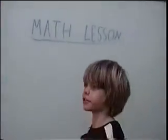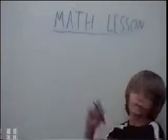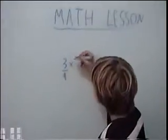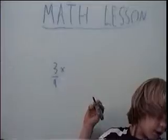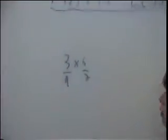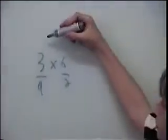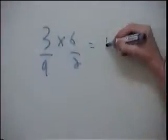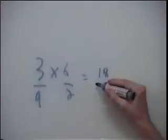Now, here's one you have to do by yourself. If you get the wrong answer, don't worry. We'll go over it. Three over nine times six over two. What you have to do is multiply the top two numbers. So, three times six equals eighteen, and nine times two equals eighteen.